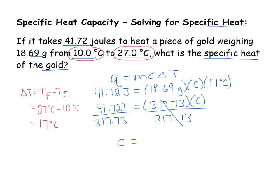The specific heat here is 0.13 joules per gram degrees Celsius. You can always double check that by plugging your C back in and making sure that it equals 41.72.